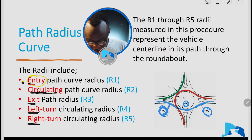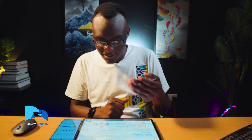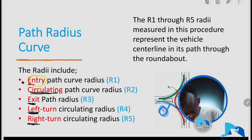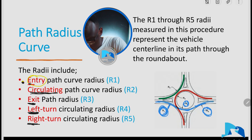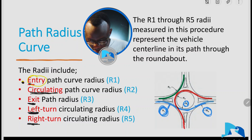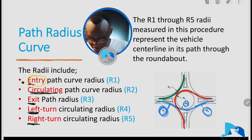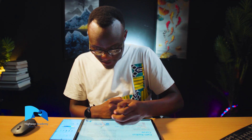R4, as shown in this drawing, is going to be the left turn radius. R4 is the movement path that interfaces with R1, R2, and R3 — it's the path shown in red. You move from one arm and interface with the left turn. And then finally we have R5, which we are going to talk about in the next lesson.